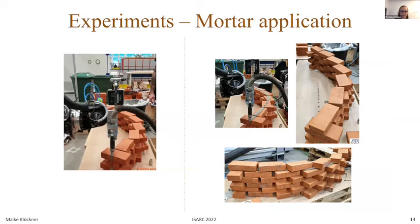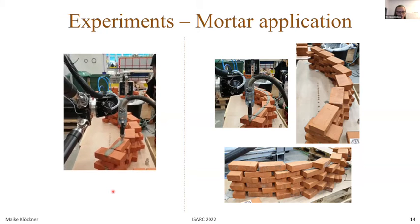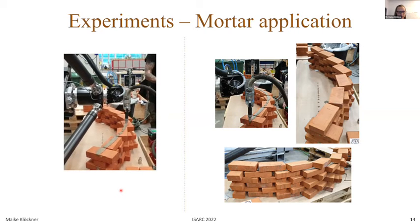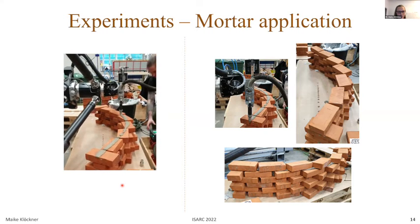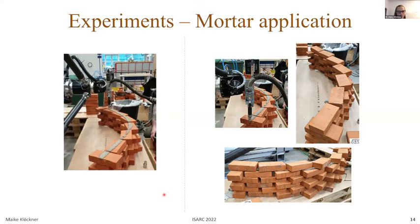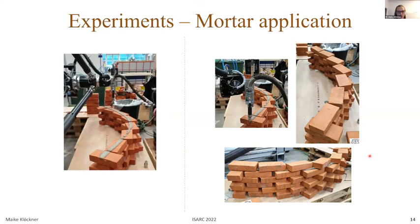For the application of mortar, we had different constraints. Mortar needs to be pumpable — it needs the right viscosity: low enough to get pumped through the hose, but high enough to be applied. Mortar needs to be applied with the right speed, and the nozzle needs the right distance of two to four millimeters between its exit and the brick. We also need to define a path where the amount of mortar overlaps as best as possible with the brick layer it's applied on and the brick layer which will be applied on top. Here you see the mortar application on the brick, and on the right you see the placed bricks on top.